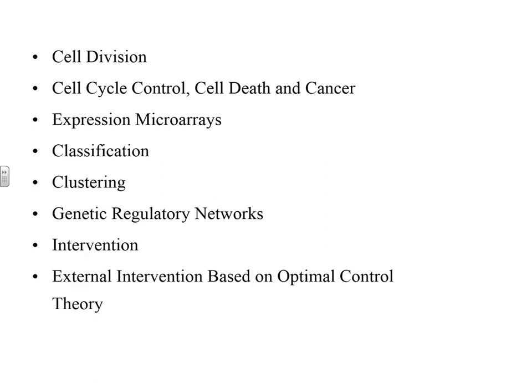Then we move into the engineering part. We'll talk about expression microarrays, which allow you to measure the activity of thousands of genes at the same time — think of it as a gene chip. Today it's possible to have the entire human genome, all the genes, on a single chip. With that data you can do disease classification: can you distinguish cancer from normal tissue, or different stages of cancer, by looking at the activity pattern of different genes? That leads into mathematical pattern recognition.